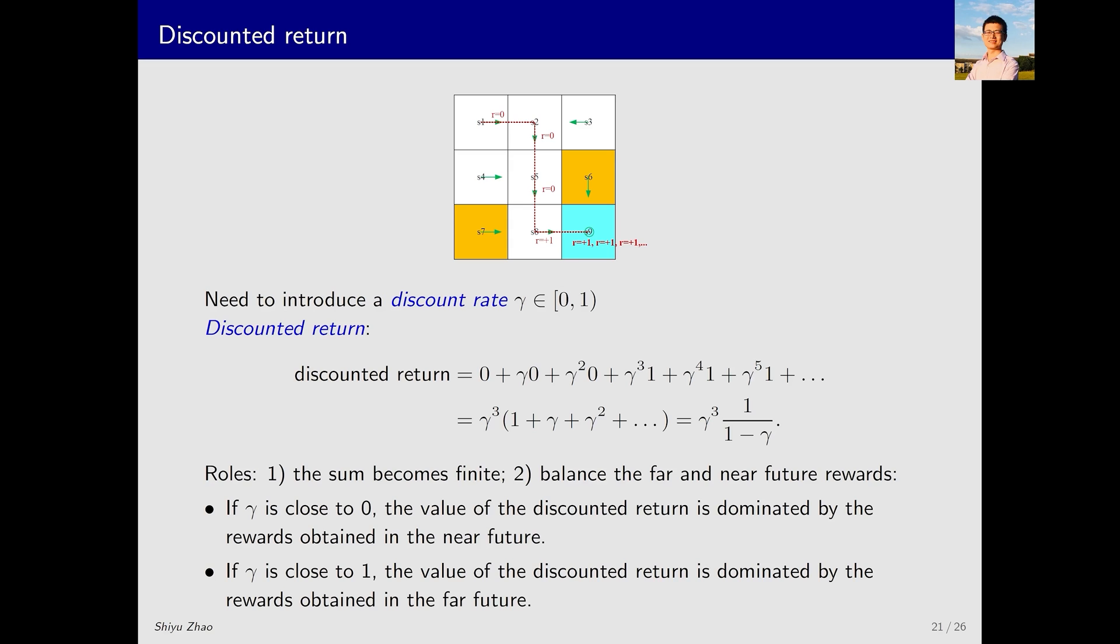How can we solve this problem? We can introduce the discount rate, denoted by gamma. This is a number between 0 and 1. Combining the discount rate with the return yields the discounted return. The rewards remain the same, but now each reward is multiplied by a discount rate. For example, gamma, gamma squared, gamma cubed, gamma to the 4th power, gamma to the 5th power, and so on. Then, we can calculate this. The initial part needs not to be considered, but later, I bring out gamma cubed. What follows is 1 plus gamma plus gamma squared, and so forth. This forms an infinite series. Those who have studied advanced calculus may know that when gamma is less than 1, the sum of this infinite series equals 1 over 1 minus gamma. Therefore, the final discounted return equals this value.